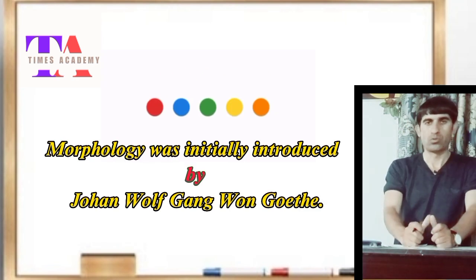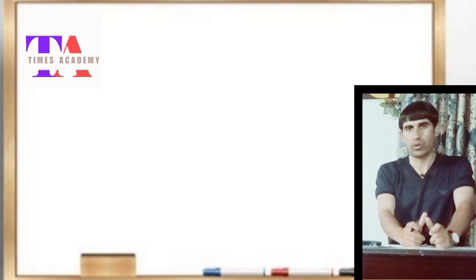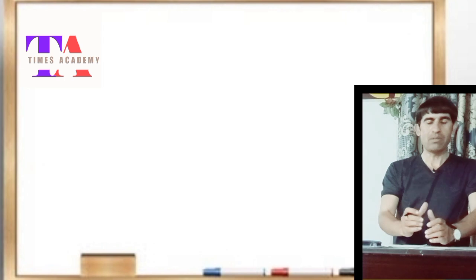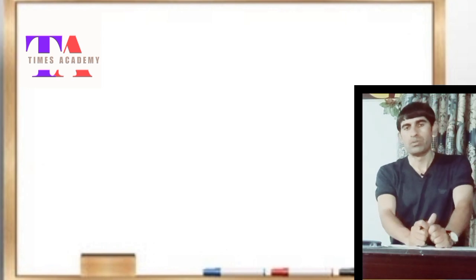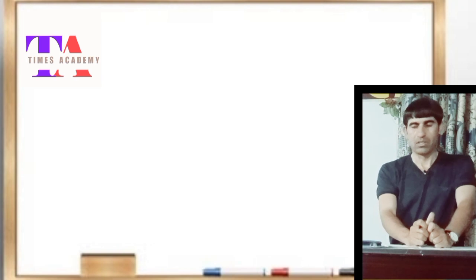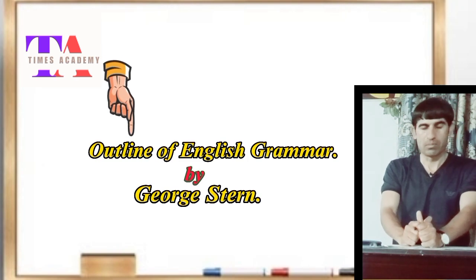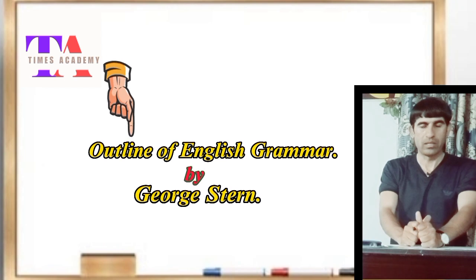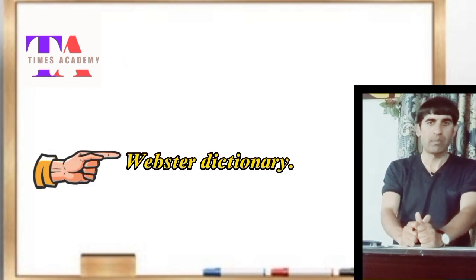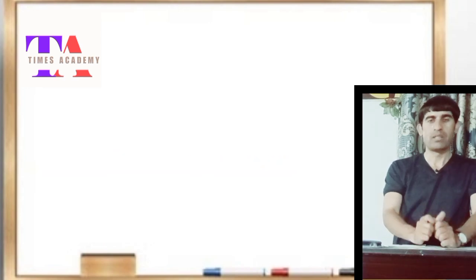The word morphology in English literature was initially introduced by Johan Wolfgang von Goethe. In this lecture I will cover definitions of morphology from two sources: number one, the English grammar book 'Outline of English Grammar' written by George Stern, and number two, the Webster American Dictionary.